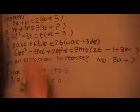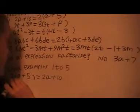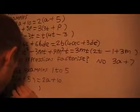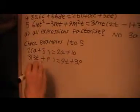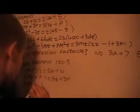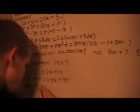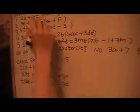We get 2a plus 10. So that's right. Next one. We get 9t plus 3p. So that's right. Next one. We get 4t squared minus 3t. So that's right.